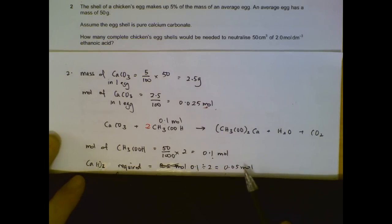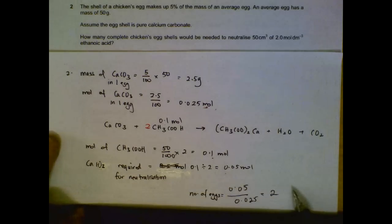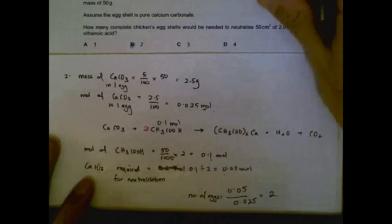Moles of calcium carbonate will be half the value. So 0.1 divided by 2. So this is the calcium carbonate required, 0.05. The number of eggs will be 0.05 divided by 0.025. Because 0.05 is what is required, 0.025 is what is provided per egg. Once we do that, we can see that we need 2 eggs to neutralize the acid. So the answer is B.